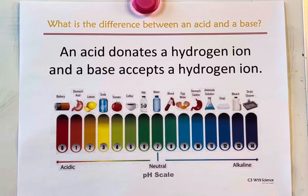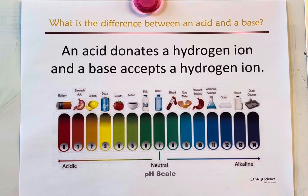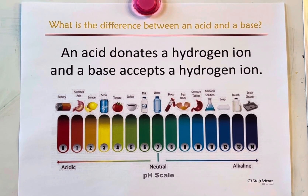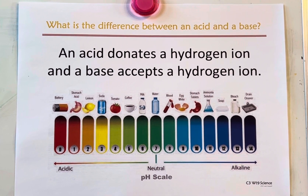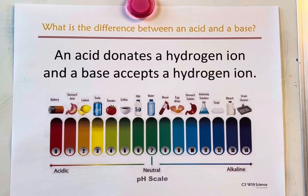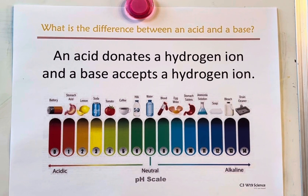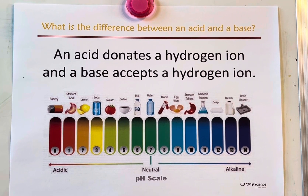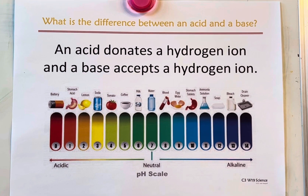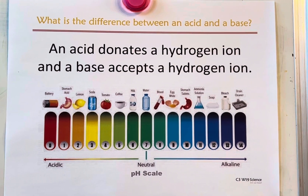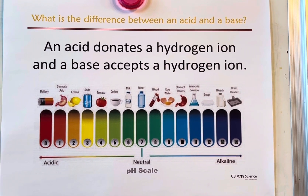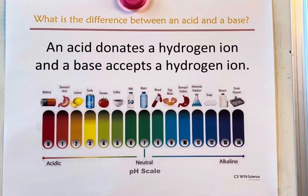What is the difference between an acid and a base? An acid donates a hydrogen ion, and a base accepts a hydrogen ion, a hydrogen ion.